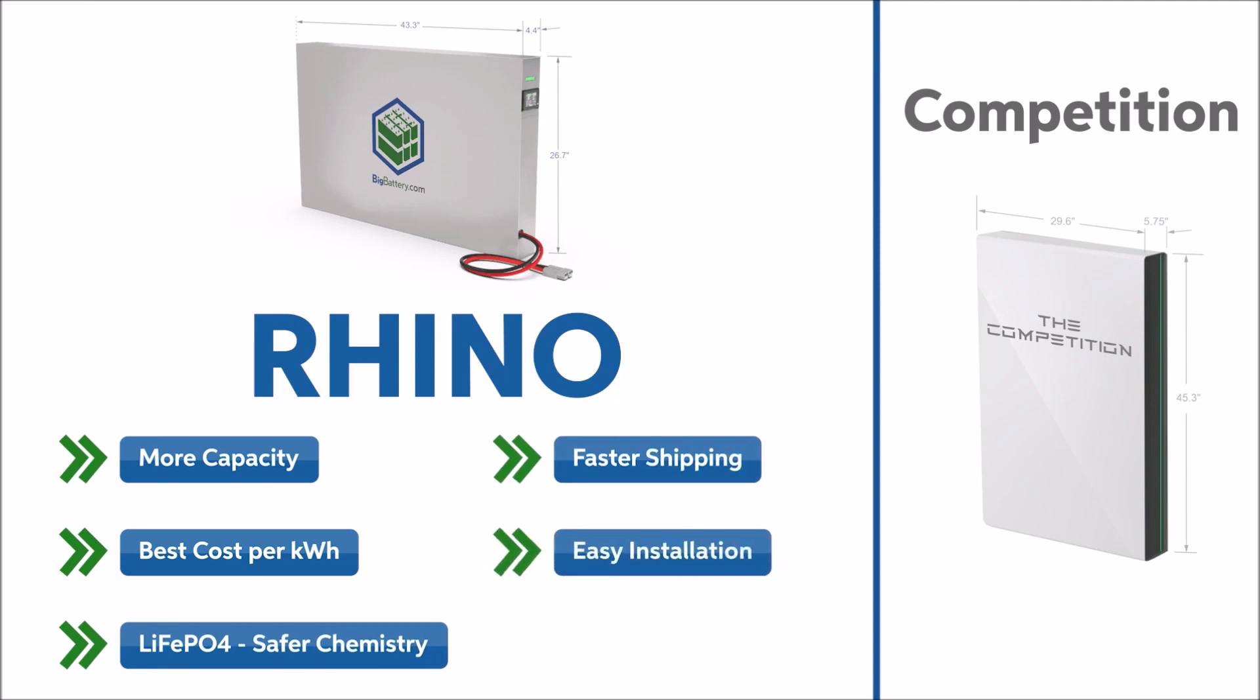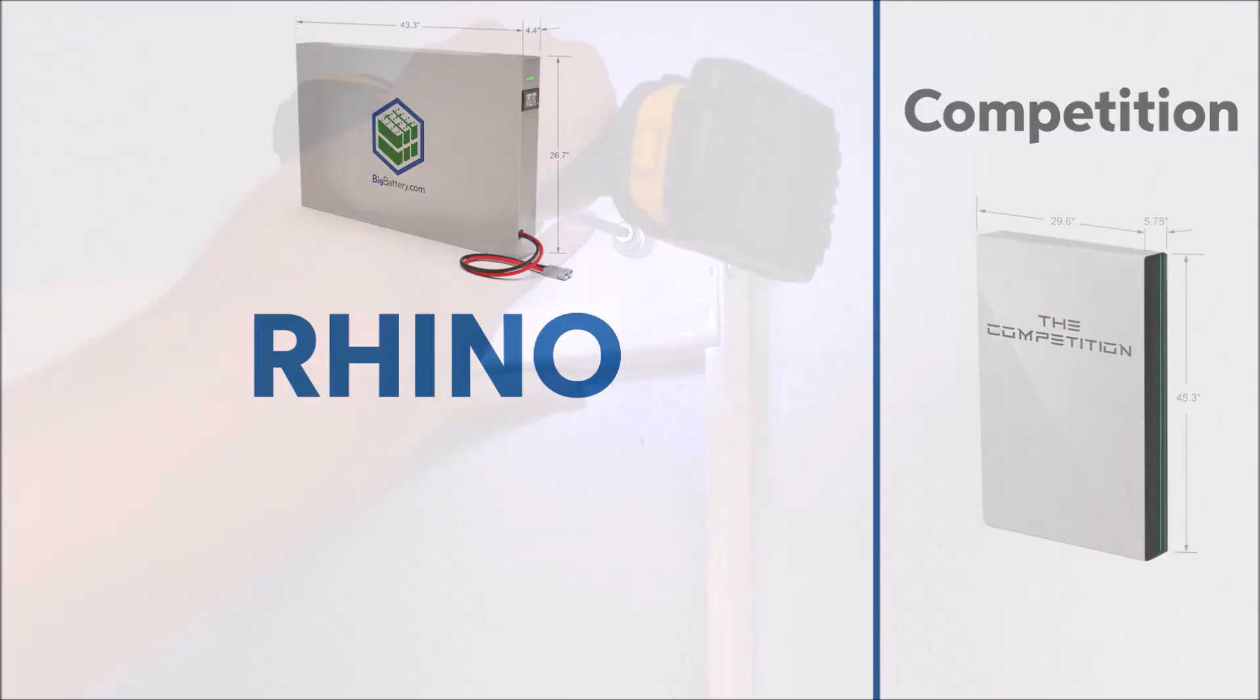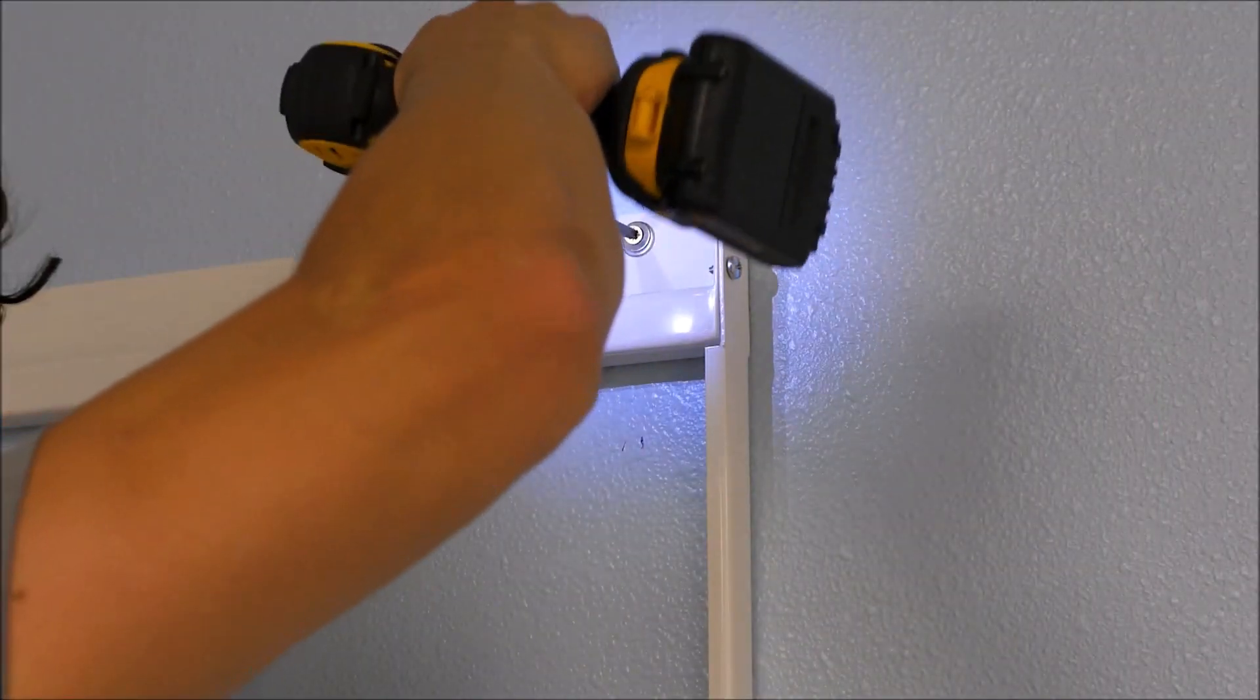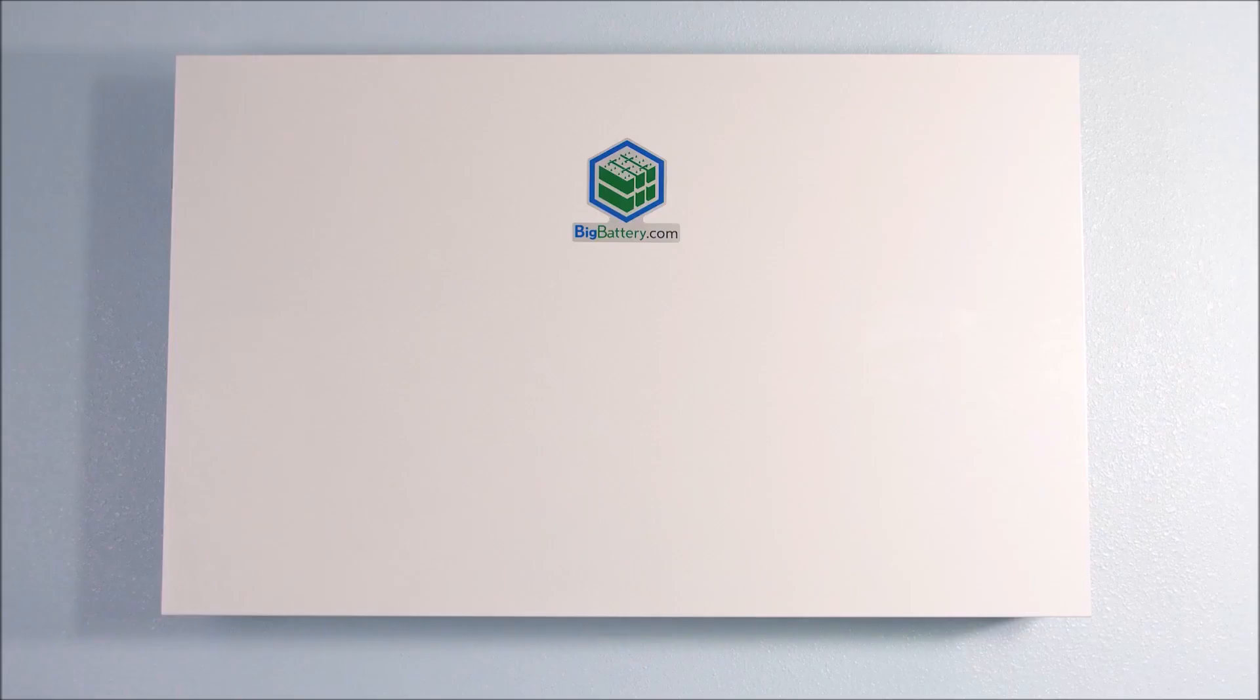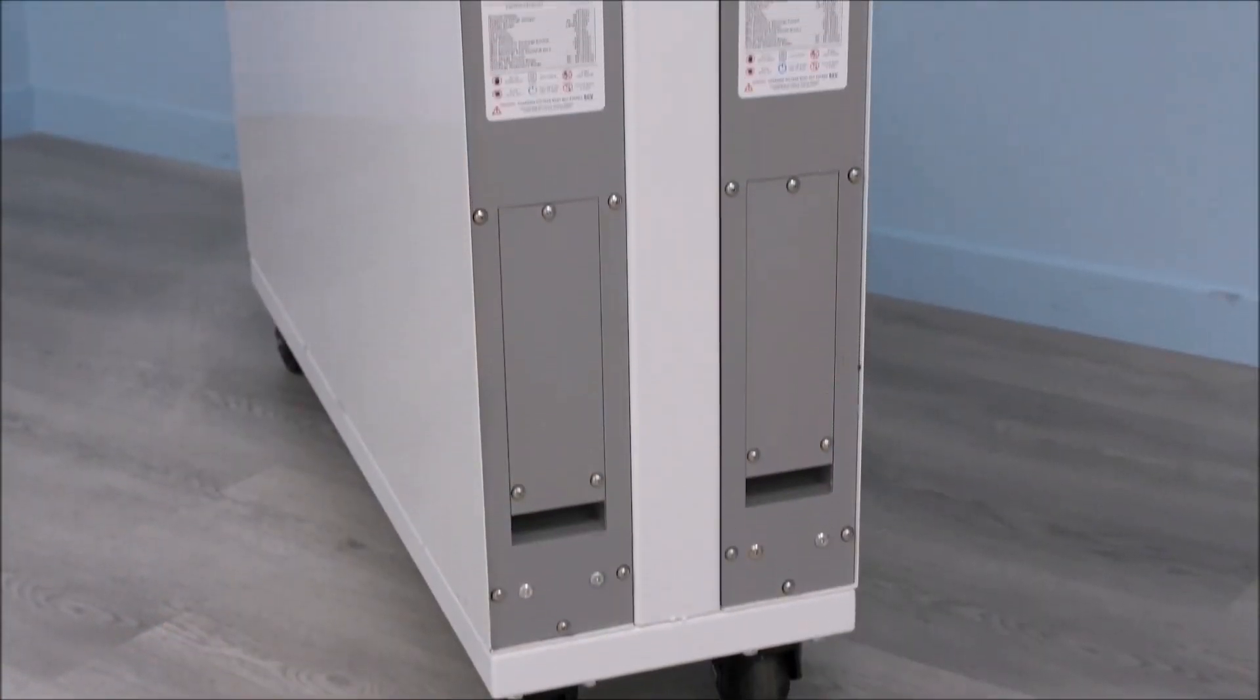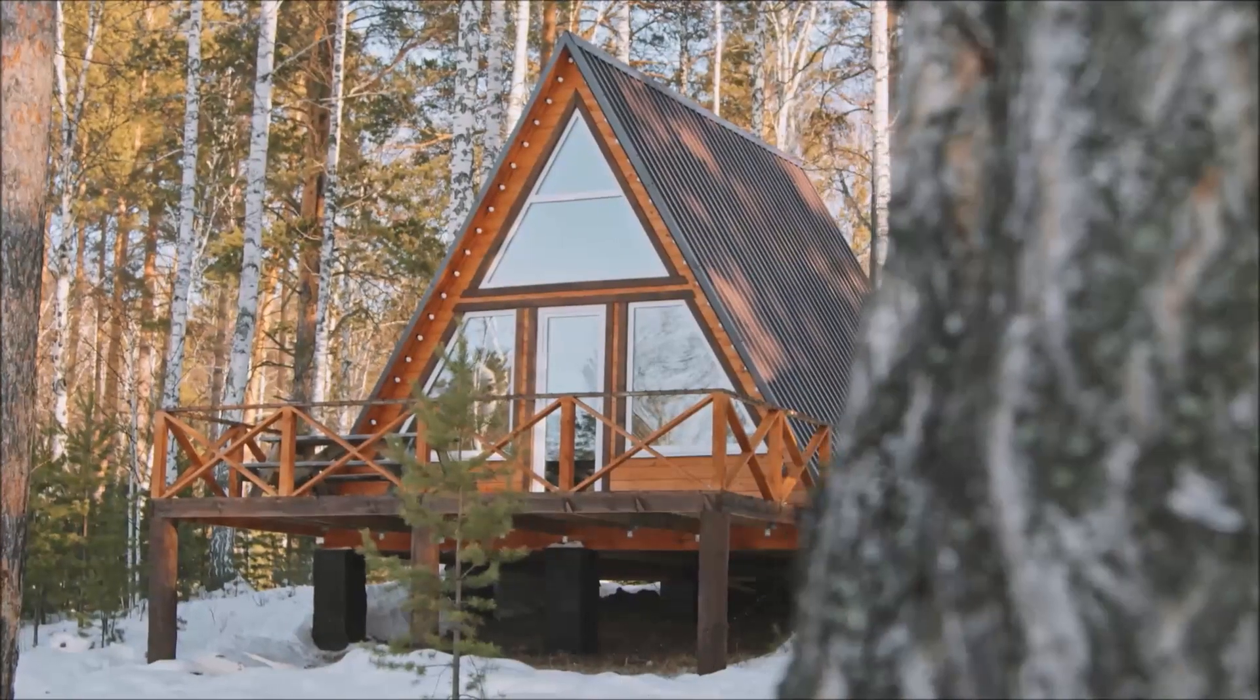This battery was designed for easy plug-and-play installations, and boasts a width of only 4.4 inches. We also include, with your Rhino, an easily assembled wall mount, so you can discreetly store your Rhino wherever it works best for you, or you can show it off as a centerpiece of your off-grid home or cabin.